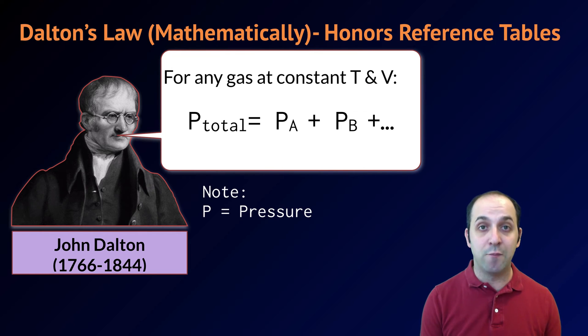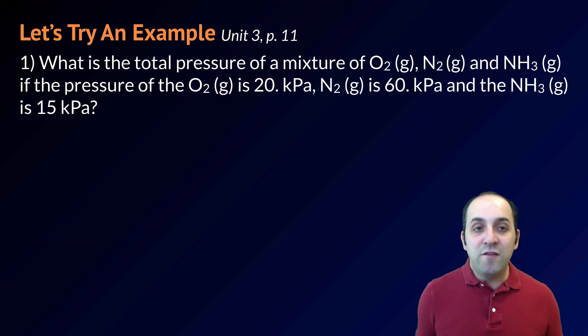Let's take a look at a couple of different problems and see how we can apply Dalton's law of partial pressures. The question is, what is the total pressure of a mixture of oxygen gas, nitrogen gas, and gaseous ammonia? If the pressure of the O2(g) is 20 kilopascals, the N2 is 60 kilopascals, and the NH3 is 15 kilopascals. Pause the video, take a moment, and see if you can use Dalton's law of partial pressures to solve this. And then when you're ready, let's move on.